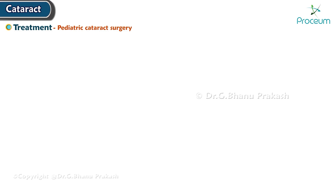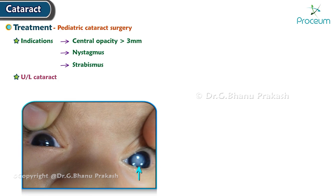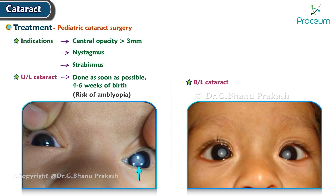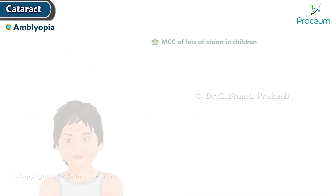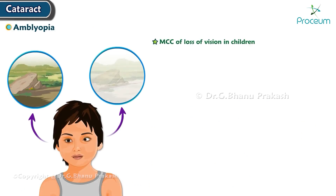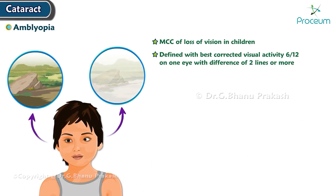Cataract surgery in children should be done only with central opacity greater than 3 mm, nystagmus, or strabismus. In unilateral cataract, surgery should be done as soon as possible — 4 to 6 weeks after birth — as the child is at risk of amblyopia. Bilateral cataracts can be done at 6 to 8 weeks. Amblyopia is the most common cause of loss of vision in children, defined as best corrected visual acuity of 6/12 in one eye with a difference of 2 lines or more.